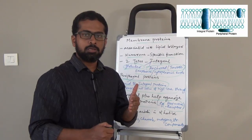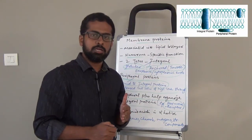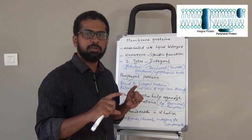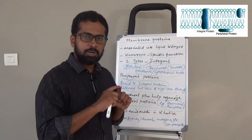When a peripheral protein interacts with an integral protein, the binding helps the distribution and organization of integral proteins in the plane of the membrane.